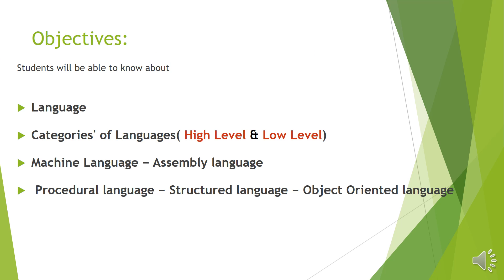In this tutorial, students will be able to know about what is meant by language, categories of language, high level language and low level language. Machine language and assembly language, which are types of low level language. High level language types are procedural language, structured language, and object oriented language. High level languages are discussed in our next tutorial.